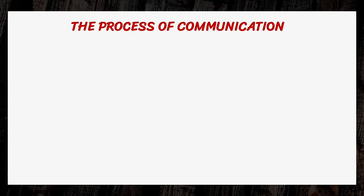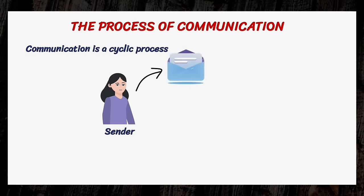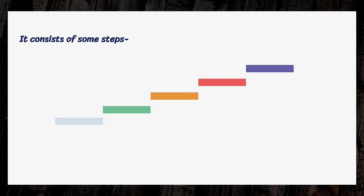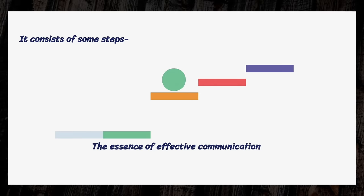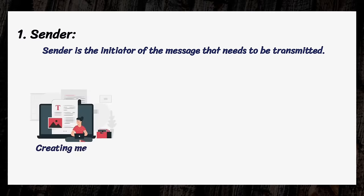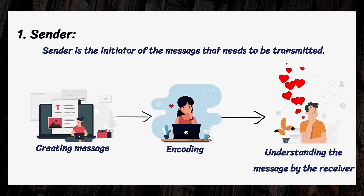Now let's discuss the process of communication. Communication is a cyclic process that starts with the sender and ends with the sender in the form of feedback. It consists of some steps, where each step constitutes the essence of effective communication. The sender is the initiator of the message that needs to be transmitted. After having created the information or idea, the sender encodes it in such a manner that can be easy to understand by the receiver.